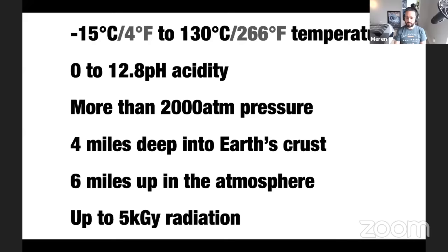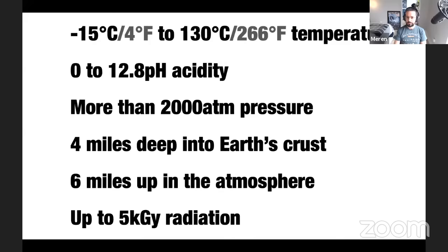You'll find microbes across pH 0.2 to 12.8, sustaining 2,000 atmospheres of pressure, four miles down in Earth's crust, and six miles up in the atmosphere. You'll find microbes that can survive up to 5,000 gray of radiation — and five gray will kill a human being within hours, because high-energy particles shatter through tissue and DNA. Those microbes that can sustain 5,000 gray are simply much better at DNA repair than we are.